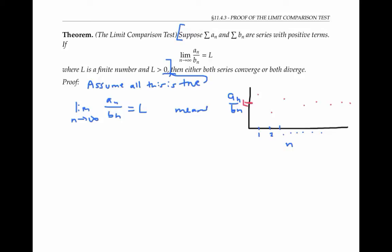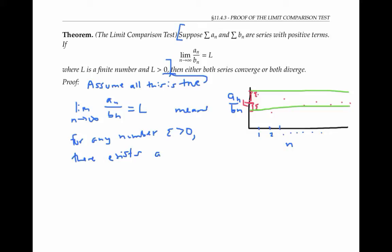Using more technical mathematical language, it means that for any small number epsilon that's bigger than zero, we can trap the ratios within epsilon of L as long as we go out far enough for our values of n. That is, there exists a number capital N such that a sub n over b sub n is between L minus epsilon and L plus epsilon for little n bigger than or equal to capital N.